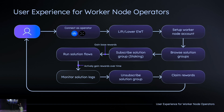For worker node operators, they can connect with their accounts using Wallet Connect or external hardware wallets, stake their tokens, set up their worker node accounts, browse enterprise solutions, and if they want to participate, subscribe to a solution group and stake to it to gain base rewards. To actively gain rewards over time, operators run these flows, make sure the worker nodes submit results in a timely manner and without failure, monitor their worker nodes, and ultimately claim their rewards.